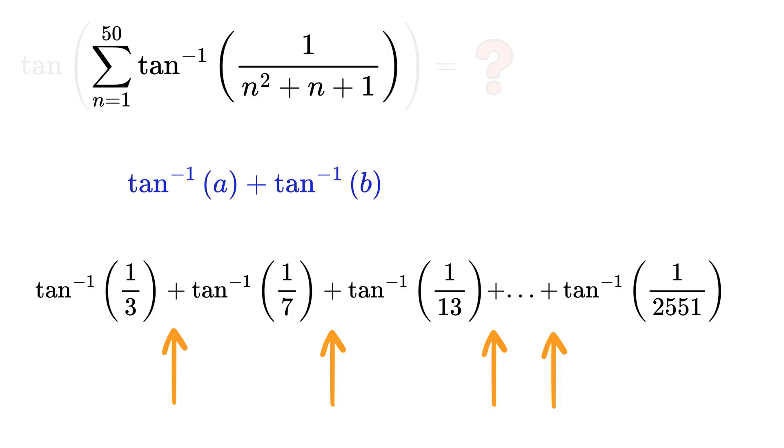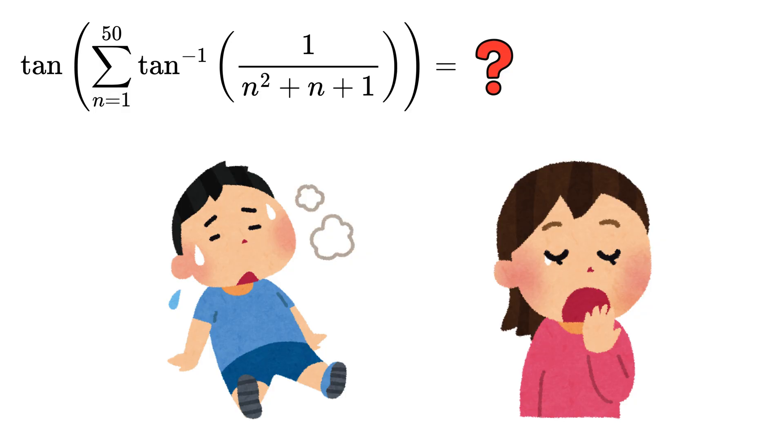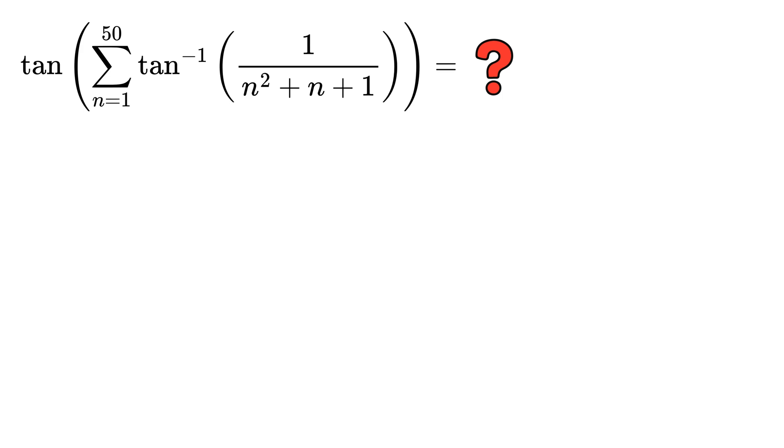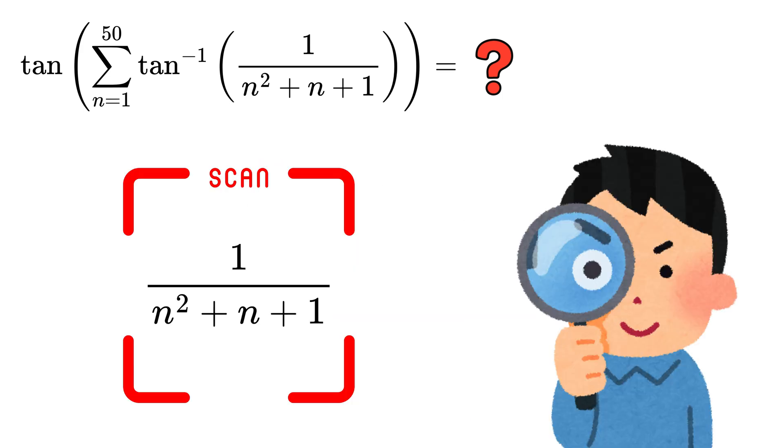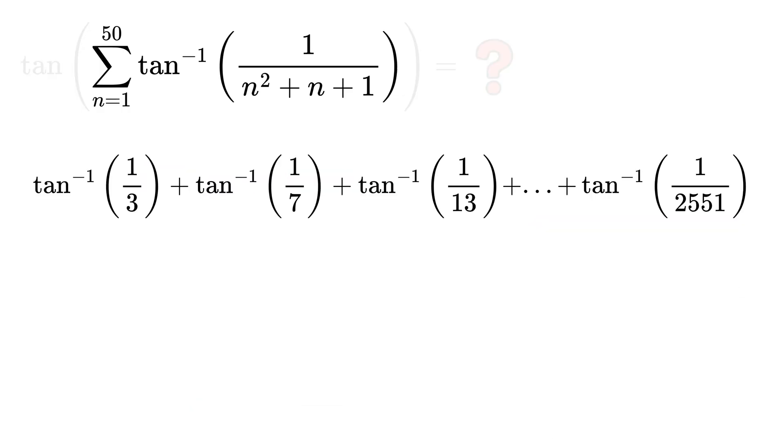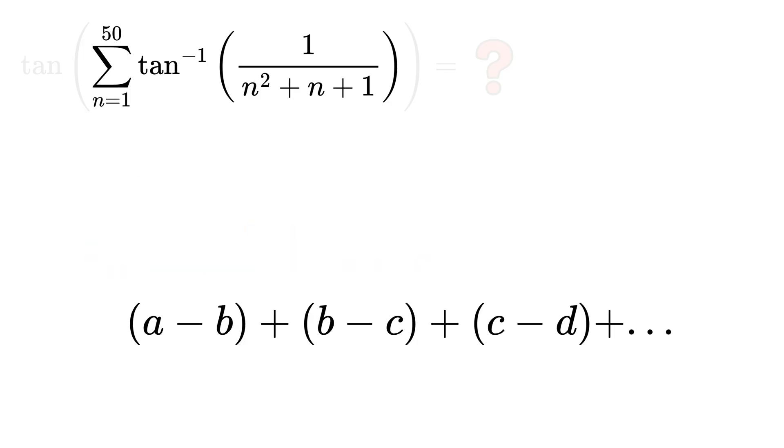But this is definitely a very long and tiring process. So instead of jumping into calculations, a smart move is to slow down, look at the pattern inside the fraction, and try to understand how consecutive terms are related to each other, because many scary looking sums actually become easy once we notice a hidden cancellation taking place.